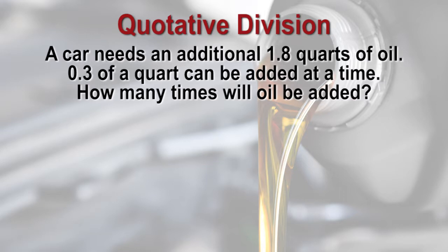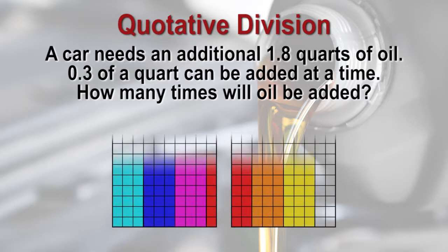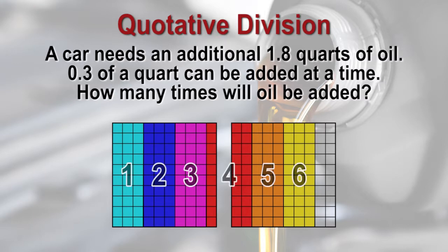A car needs an additional one and eight tenths quarts of oil. Three tenths of a quart can be added at a time. How many times will oil be added? We need to find how many groups of three tenths we can take out of one and eight tenths quarts of oil. If we build the model, it looks like six groups of three tenths oil are needed.